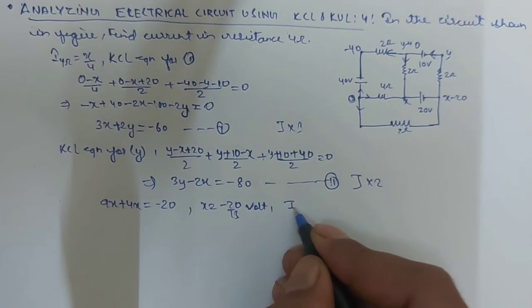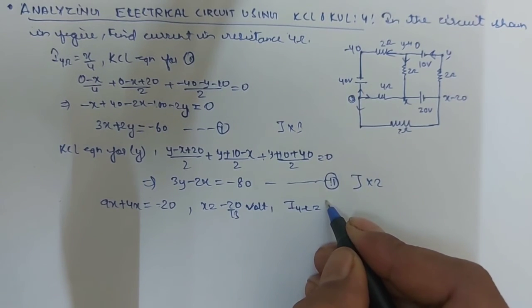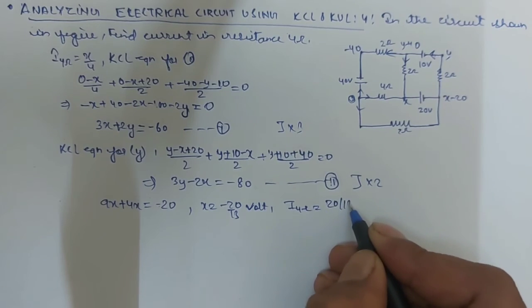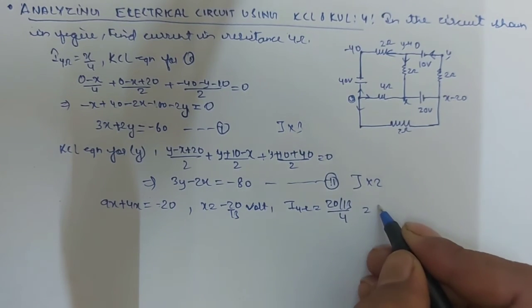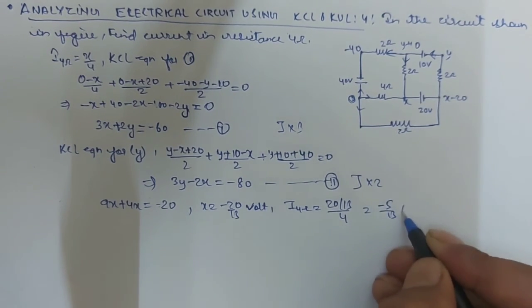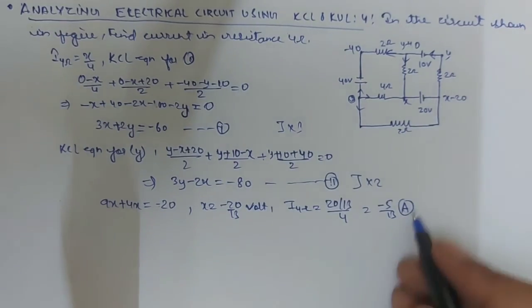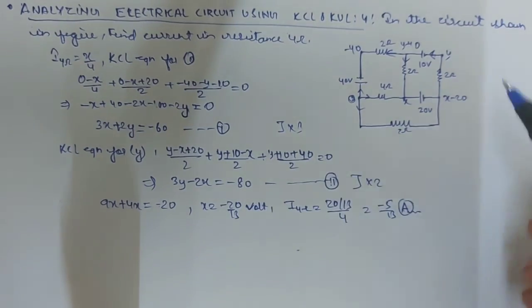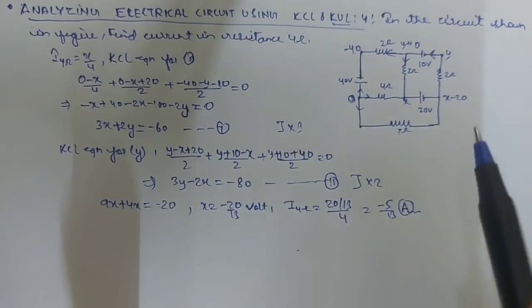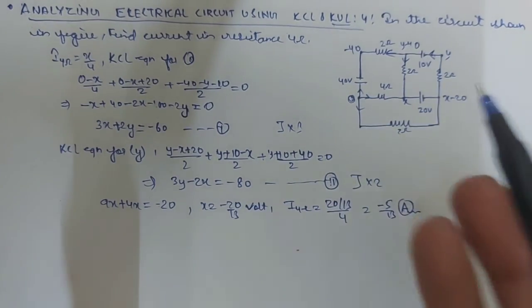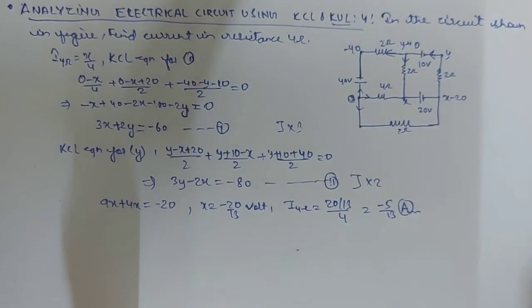So, let's put this value in x by 4. Here x so, 20 by 13 by 4 will get minus 5 by 13 ampere. This is the current. Again, I am saying you can solve this question using the KVL method but that will be quite lengthy students.